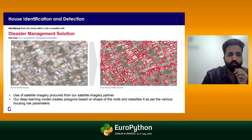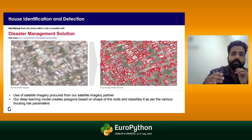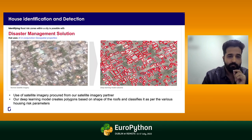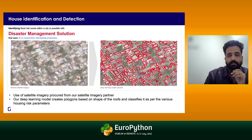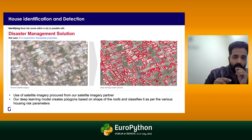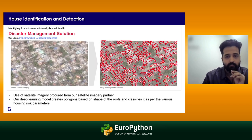This is normal satellite imagery and how one of the deep learning models classifies this particular imagery. Our deep learning model creates polygons across each and every particular building with a certain accuracy, which I will share in the next slide.